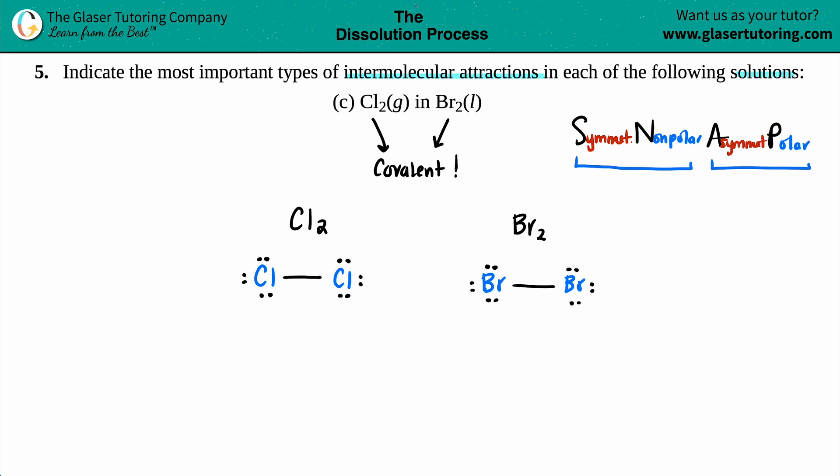If I cut this molecule right down the middle, I have two equivalent chlorines—that's symmetrical, so this is non-polar. If I cut the bromine down the middle, I have two identical bromines, so those are non-polar as well.